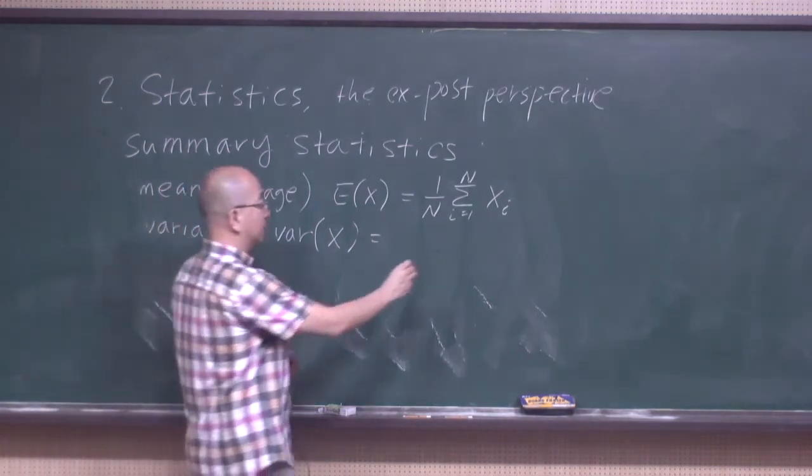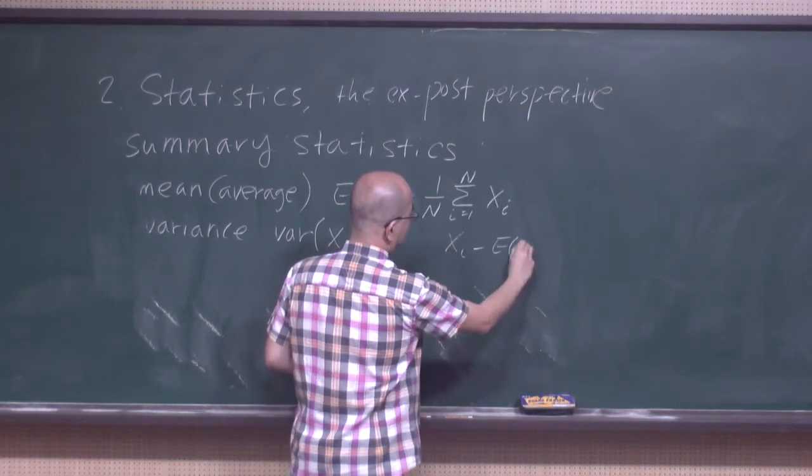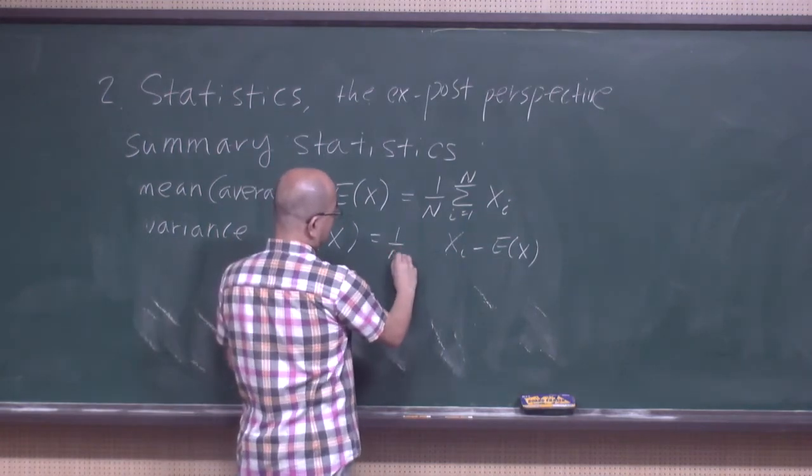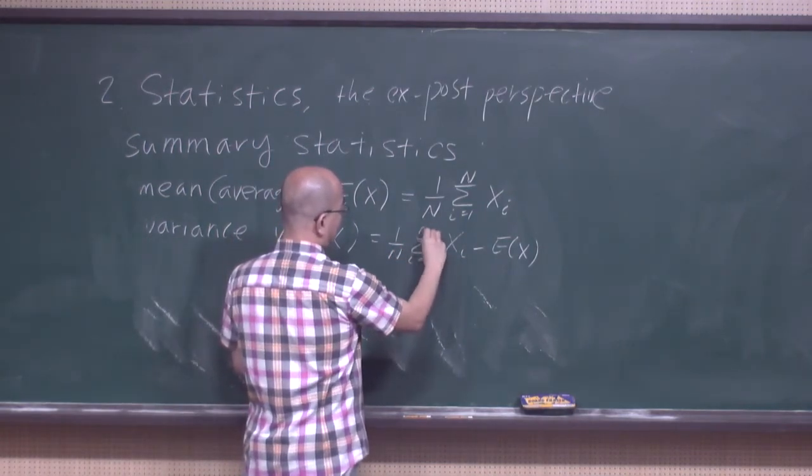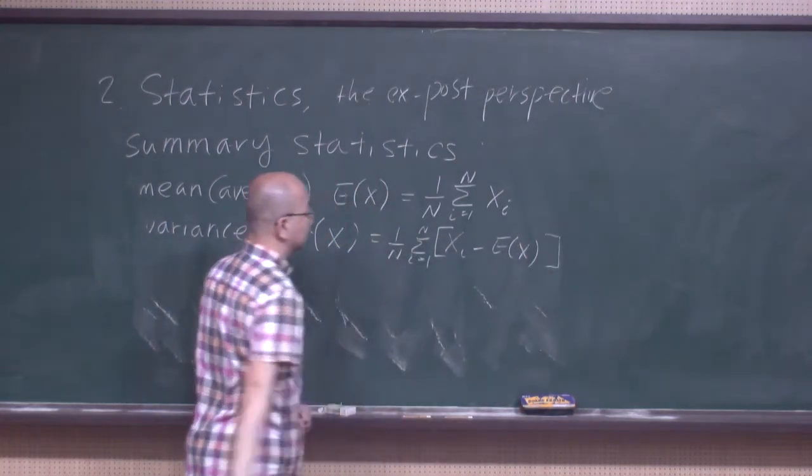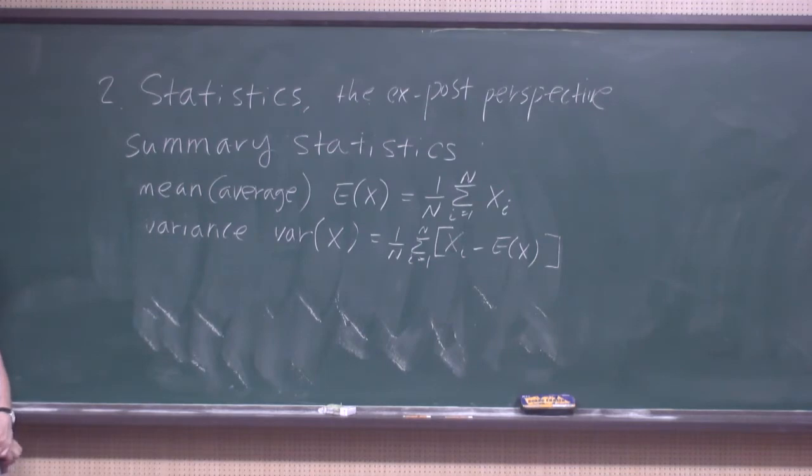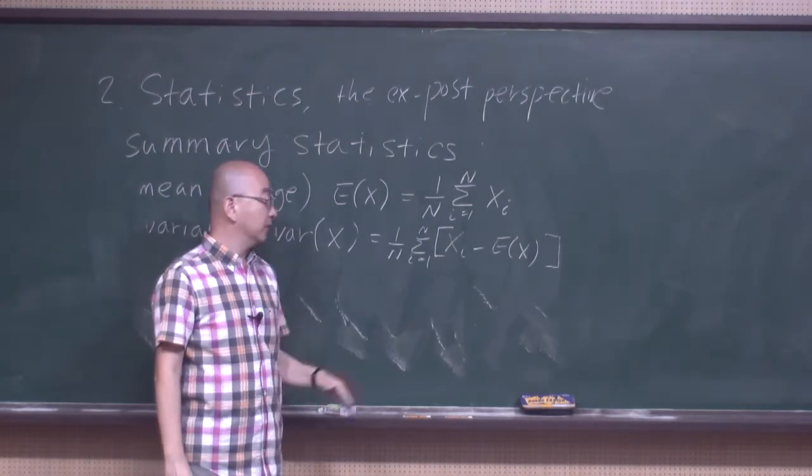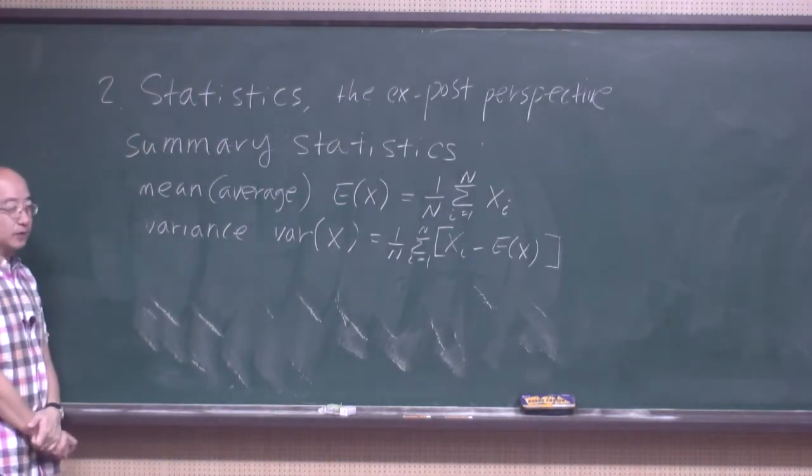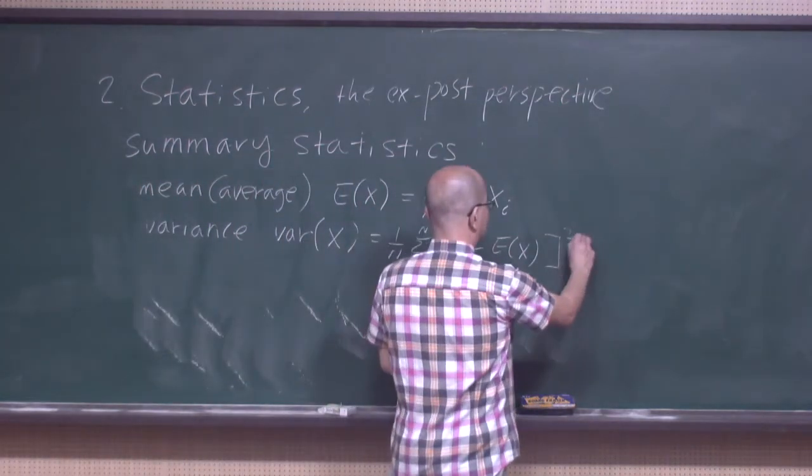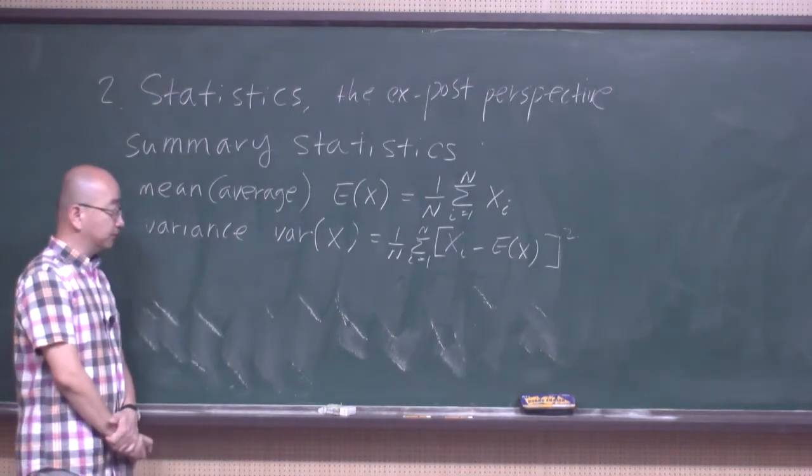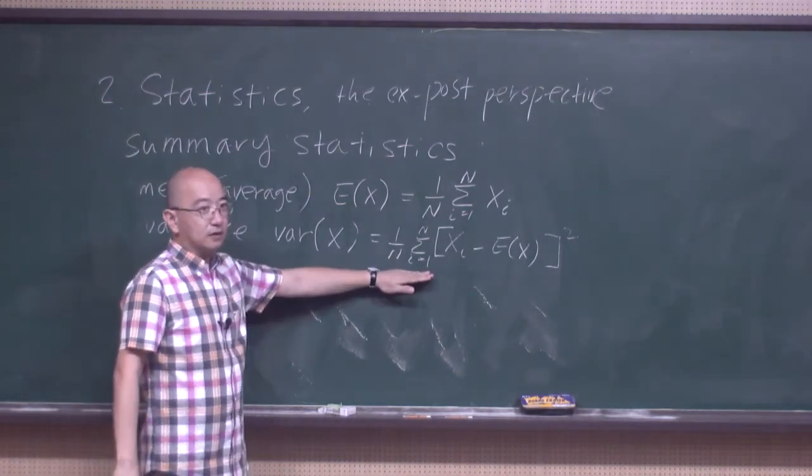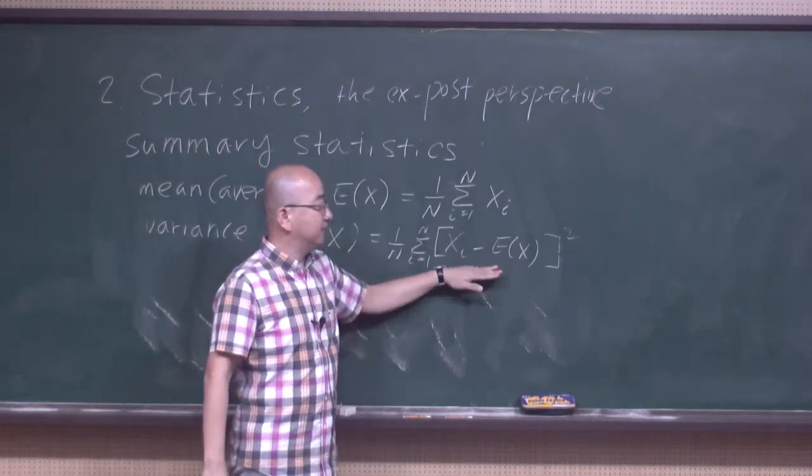So we will think about this. One possible thing one could do is just to add this number across N. And of course, if you do that, this will be just zero. Because on average, the deviation from the mean should be zero. So this doesn't tell you much about the variability in X. So the next thing you can think of is just square this distance. Once you write it this way, variance can be interpreted as the average of the squared deviation from the mean.